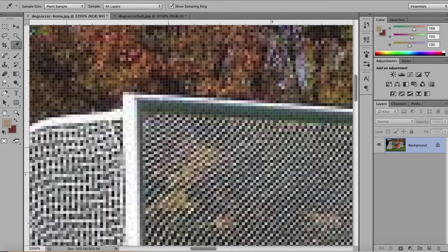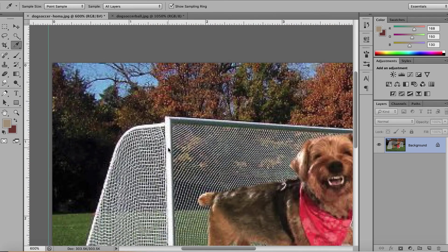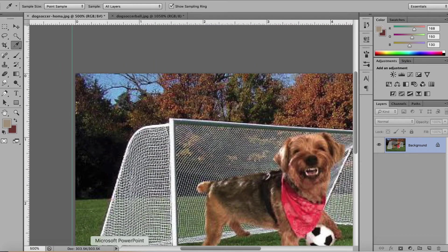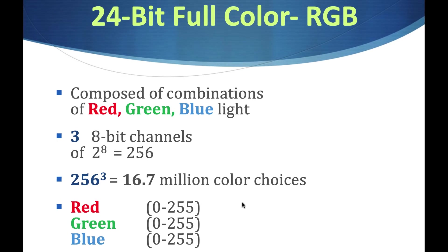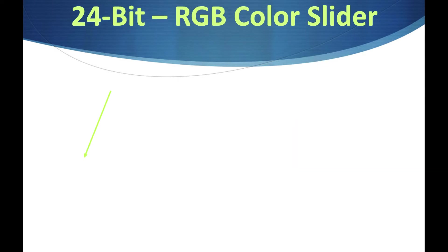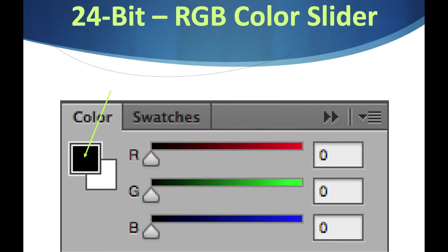Let's go back to the PowerPoint. Red, green, and blue each go from 0 to 255. If it's 255, 0, 0 it would be all red; all green would be 0, 255, 0. When all three are the same value they're gray. Warmer colors have more red and green; cooler colors have more blue. That's RGB color.